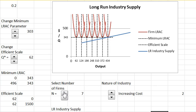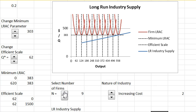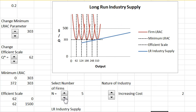So in an increasing cost industry, the supply price rises with industry output because minimum average cost is rising as inputs are getting more expensive. Let's do the last possibility. I'm going to bring this down to five again.